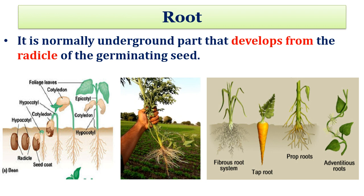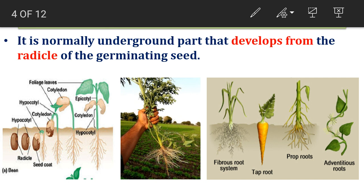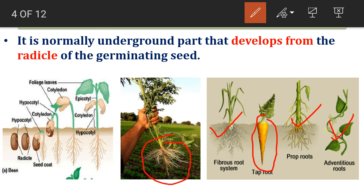Any other type of root which does not emerge from the radicle is a false root, such as adventitious roots. Here, this is the example of a tap root, and these are the examples of adventitious type of root system.